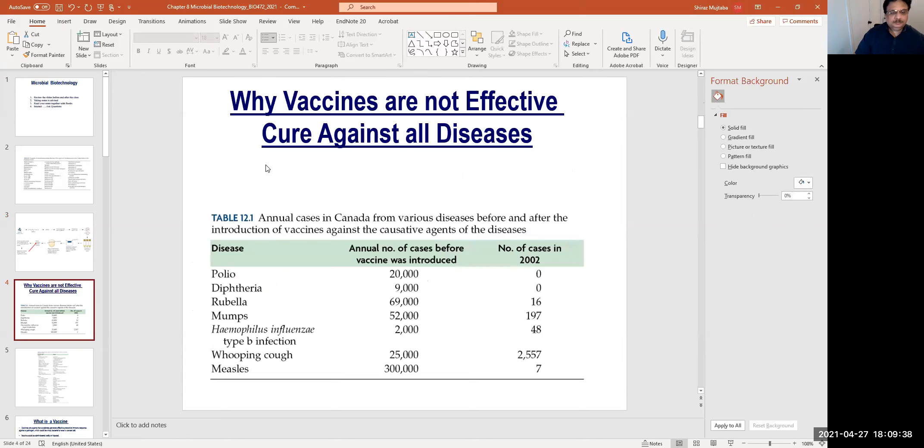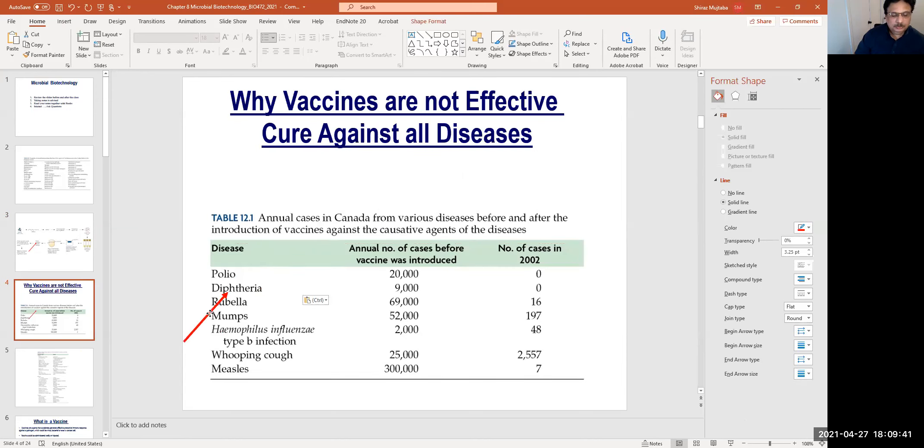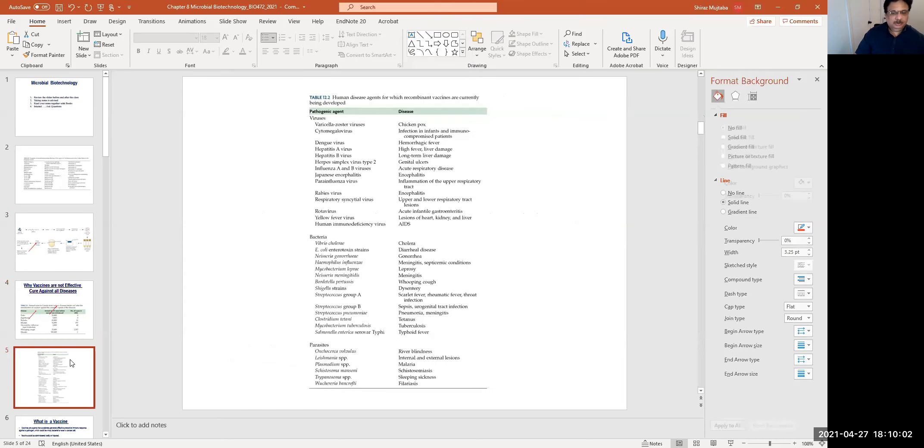In addition, these microbes have been used to produce vaccines, for example, polio vaccines. There have been no cases or very minimal cases after 2002. Similarly, diphtheria and various others. These vaccines are also produced by these microbial organisms by genetic manipulation. This is a list of various pathogens that can infect human beings, and vaccines are being worked upon.